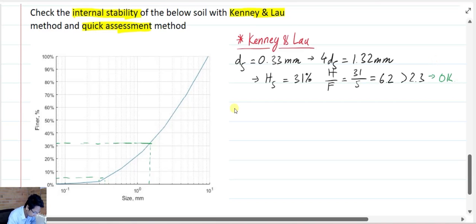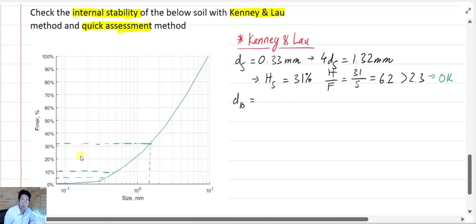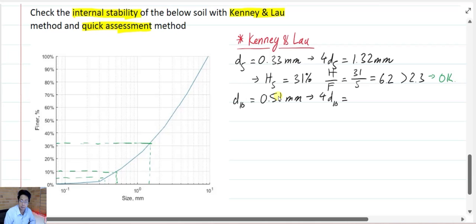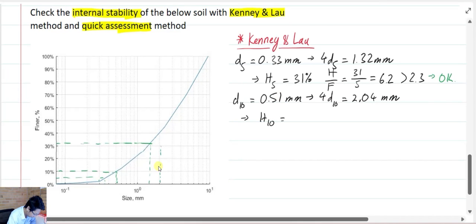Again, now I'm checking for my D10. I have my D10 equal to roughly about 0.51 mm. And from here, I have my 4D10 equal to 2.04 mm. And from here, I have my H over F equal to 40 over 10, which is 4 and it's larger than 2.3.